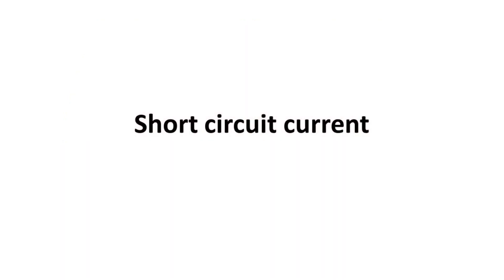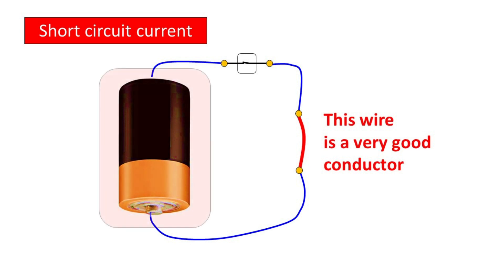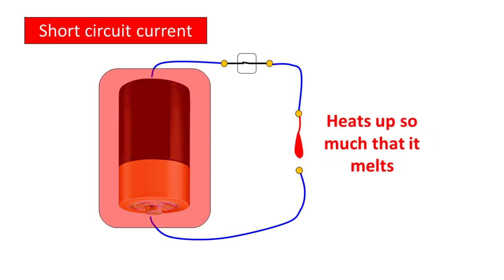Short circuit current. It is when there is a passage of electrons, but there is no transducer. By mistake, a good conductor was connected instead of the transducer. In this case, an electron stampede occurs to neutralize the atoms. Billions of electrons pass almost instantly. It is usually so severe that the battery can explode if the conductor doesn't melt first.